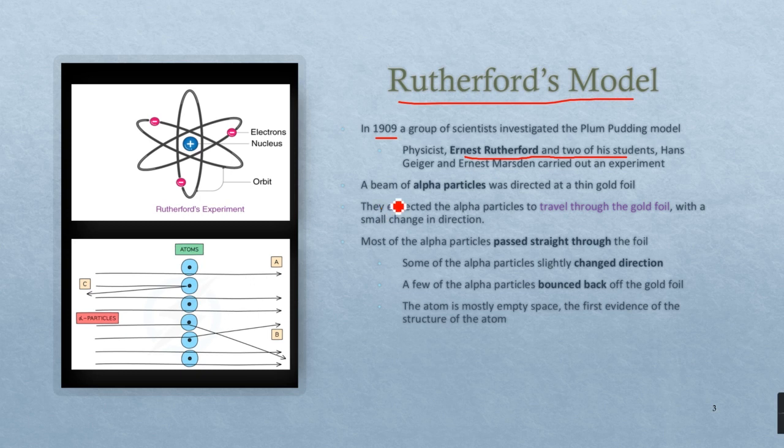The two students were instructed by him to shoot a beam of alpha particles directed at a thin gold foil. Their expectation or hypothesis was that the alpha particles would travel through the foil with a small change in direction.